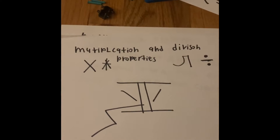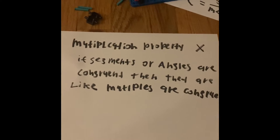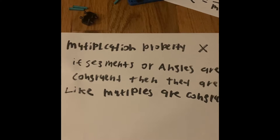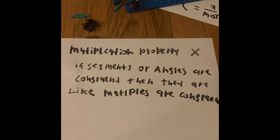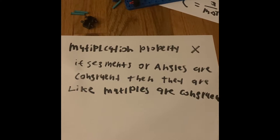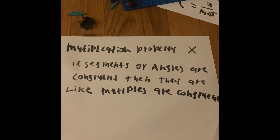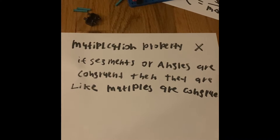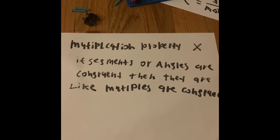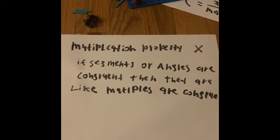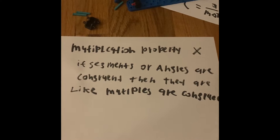To start off the video, let's start with Multiplication. With the Multiplication Property, it explains that if segments or angles are congruent, then their like multiples are also congruent. The Multiplication Property works with measurements like angles and segments that have the same length, distance, and size — and they must be congruent.